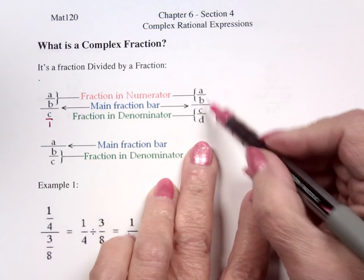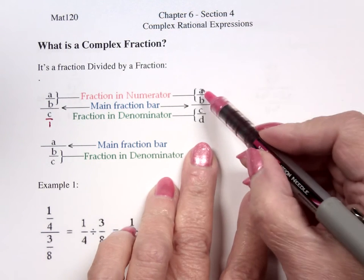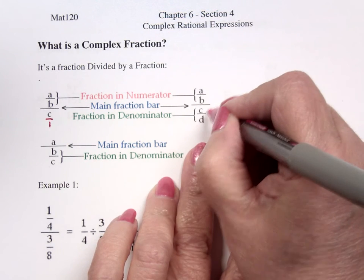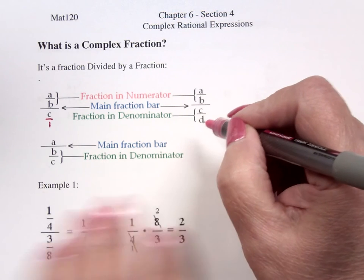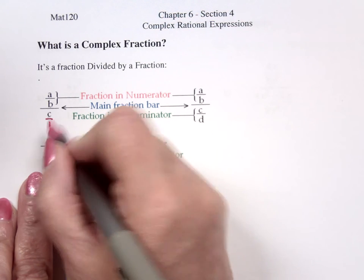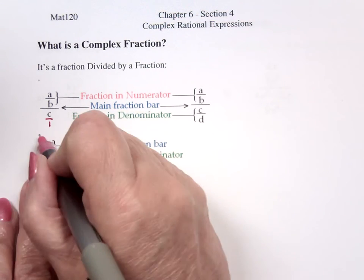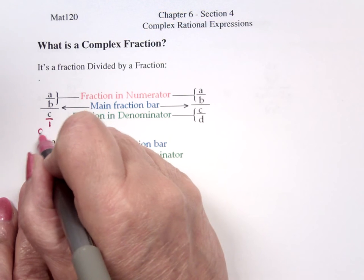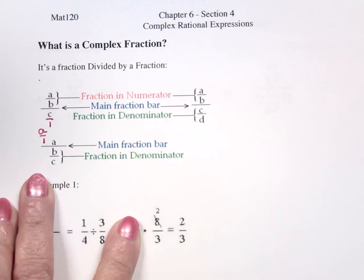This is a true complex fraction. A divided by B and then divided by C divided by D. Here's one where A is alone in the numerator. So what is this really? This numerator is really A over 1 divided by B divided by C. So if that doesn't have a denominator, it has 1. And you'll run into that.